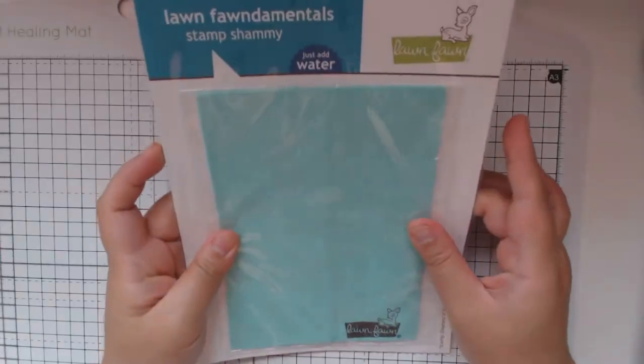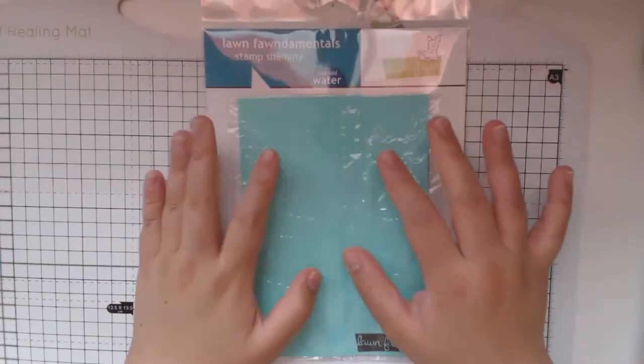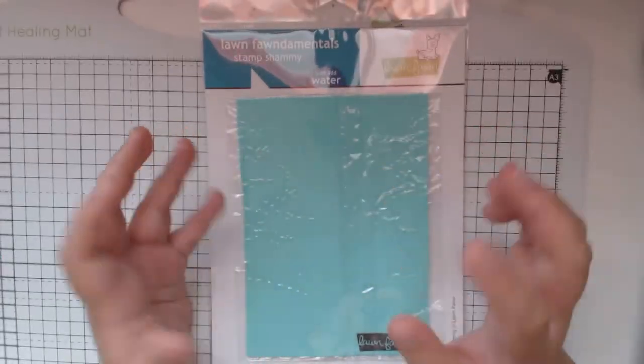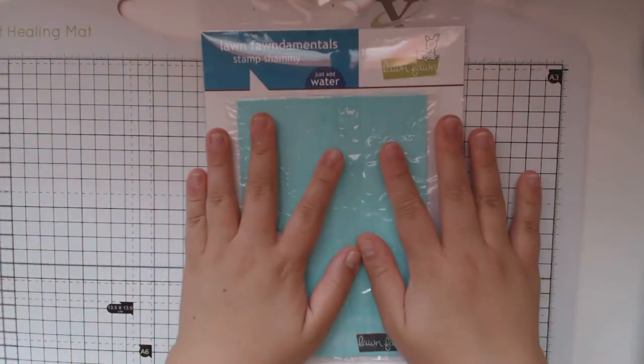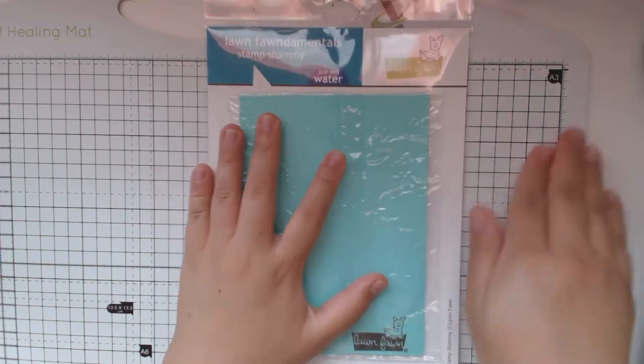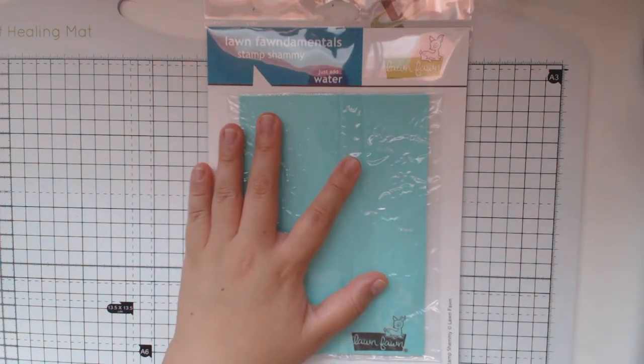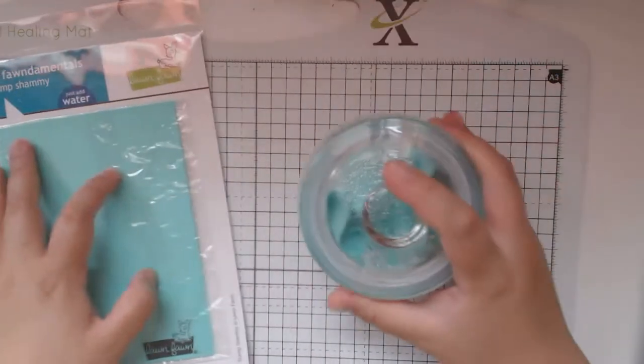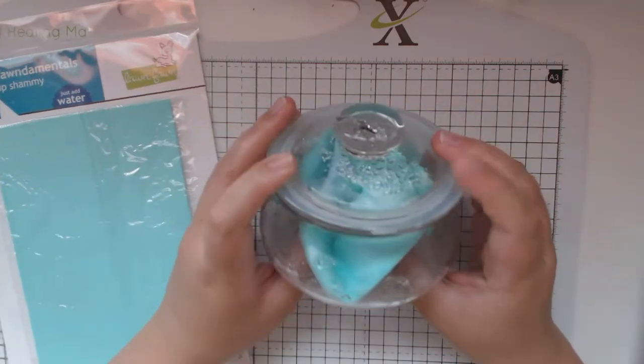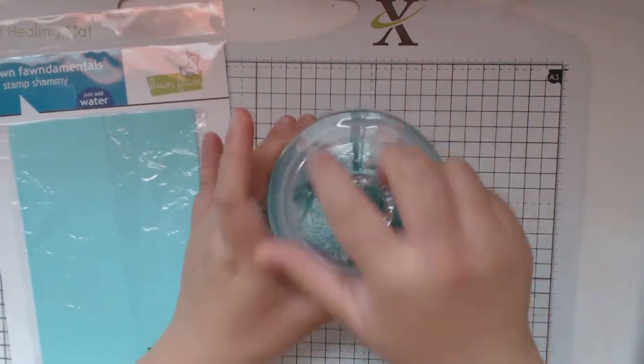I recommend the stamp chamois cleaning cloth because you can reuse it. You just wash it and then reuse it again and again to clean your stamps. Here I use a small jar to store my stamp chamois. I just add some water to hydrate the cloth.